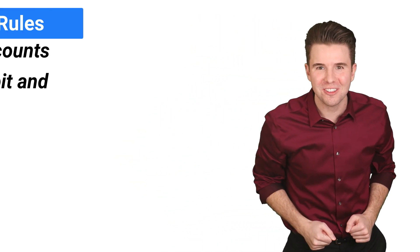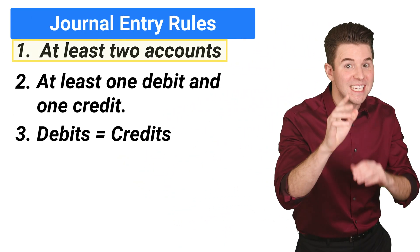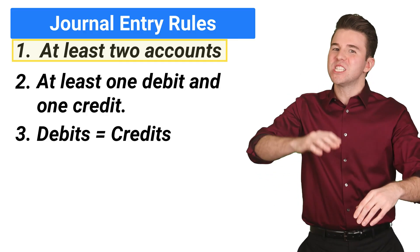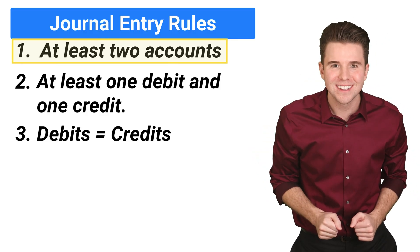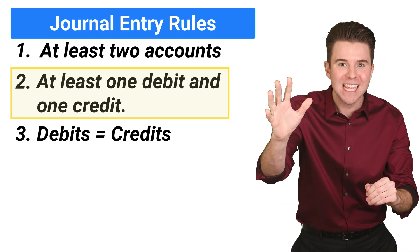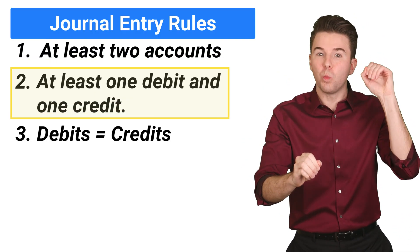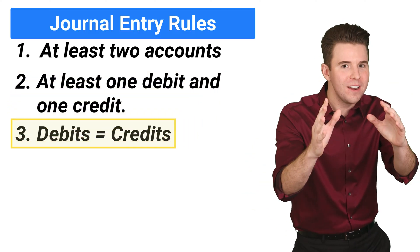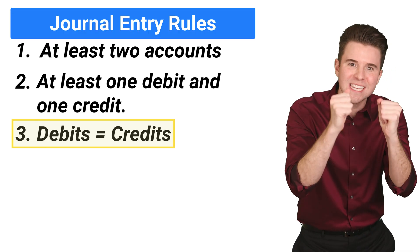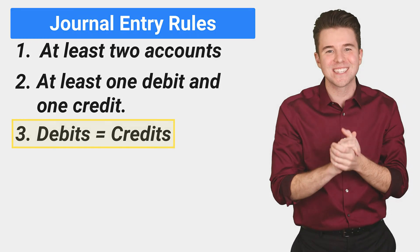So that wraps up our example. Now before I let you go, remember our three rules when recording journal entries. First, there must be at least two accounts involved. Second, there must always be at least one debit and at least one credit. Third, total debits must always, always equal total credits.